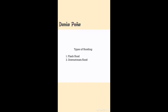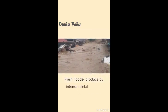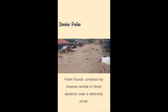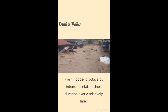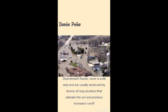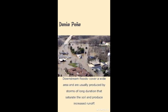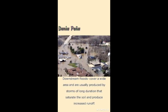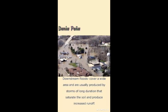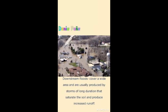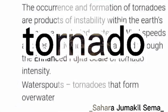Types of flooding: flash floods and downstream floods. Flash floods are produced by intense rainfall of short duration over a relatively small area.